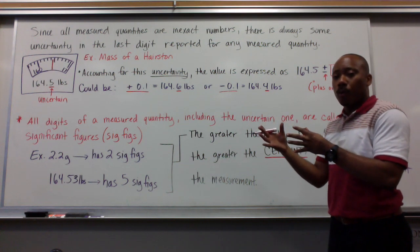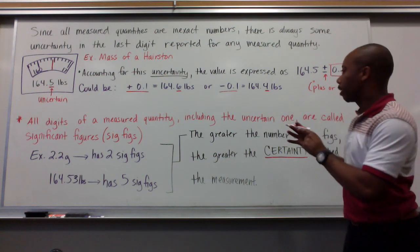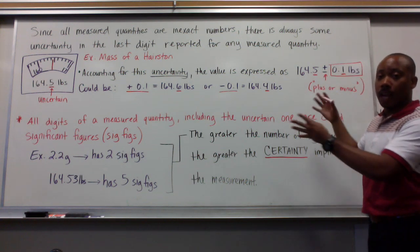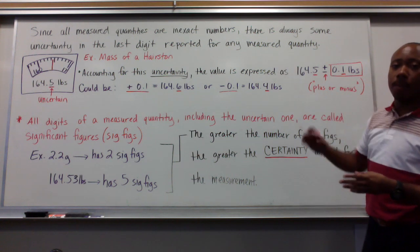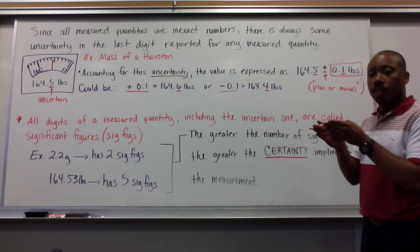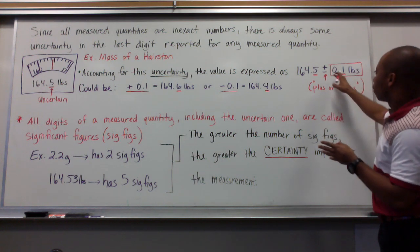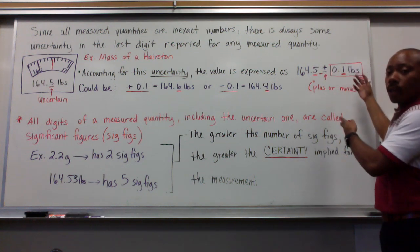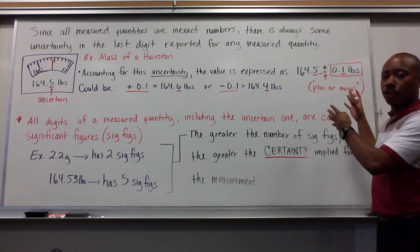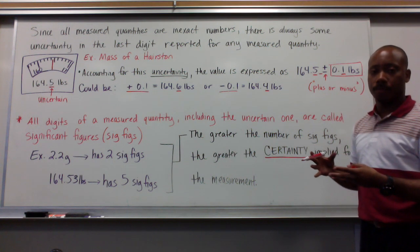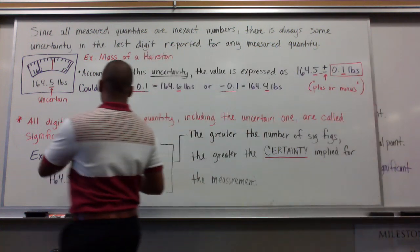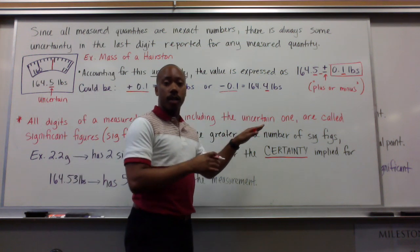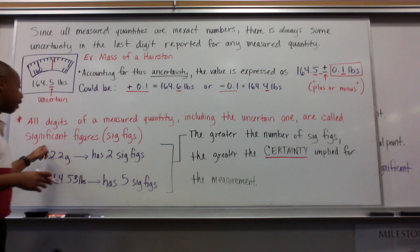It's either plus 0.1 or minus 0.1 — that's because we approximated to the tenths place. If I approximated out to the hundredths place, if I had more lines on my scale so I could make a more precise measurement, then it would be plus or minus 0.01 pounds. Now, all digits of measured quantities, including the uncertain one — that last digit — are called significant figures.